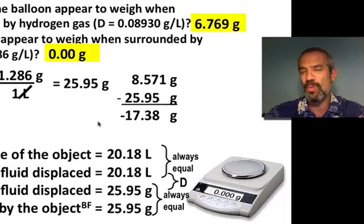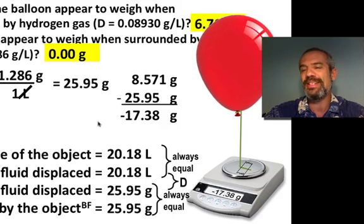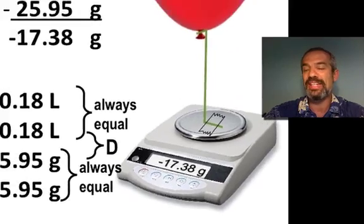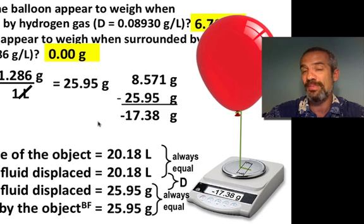But, you might wonder, what's that negative 17.38 grams? Well, if we were to take the balloon and tape it down to the scale, it would actually be creating a lifting force on that scale's plate, and you would see a negative 17.38 grams. And, scales actually do that. If you lift up on the scale, it'll give you a negative reading there.